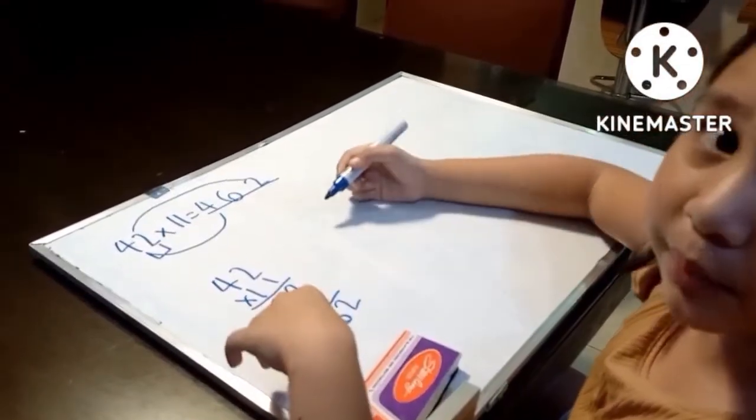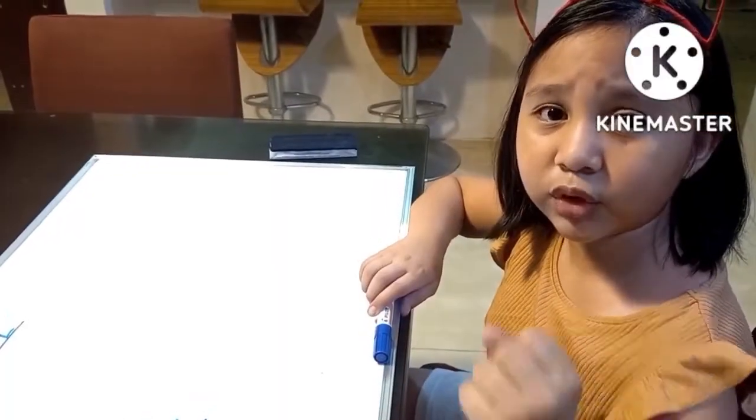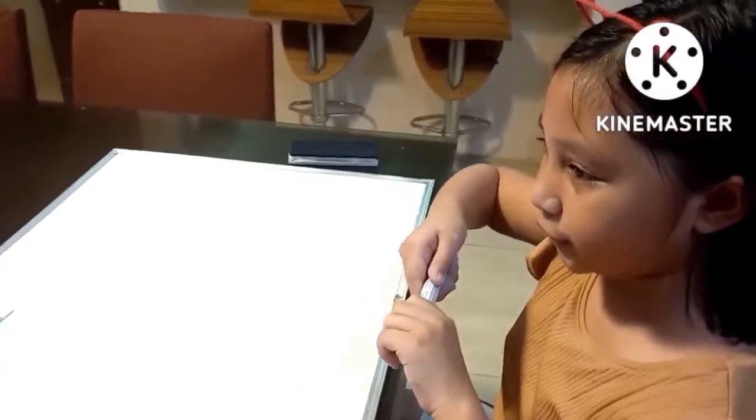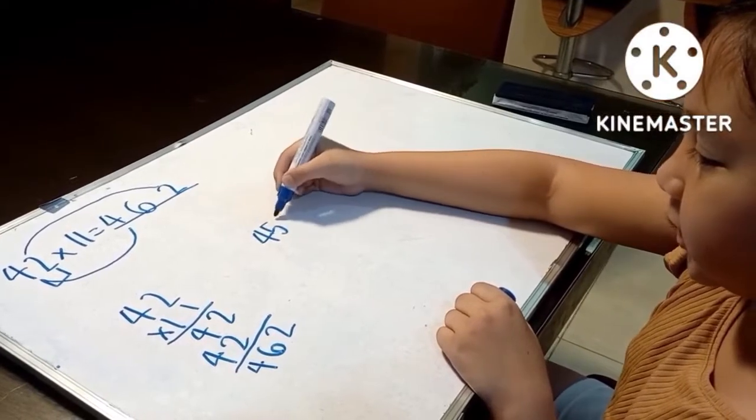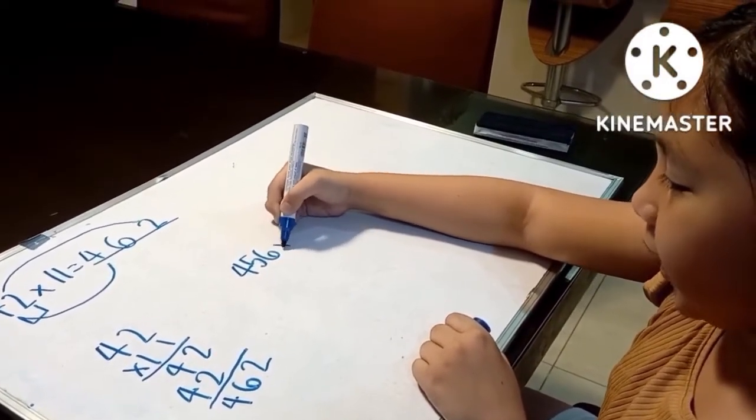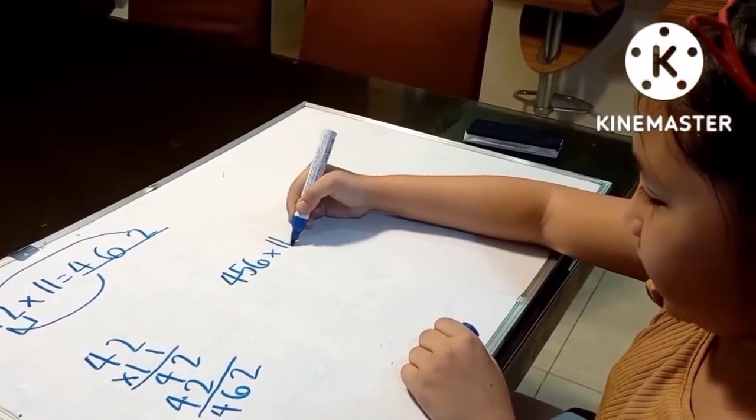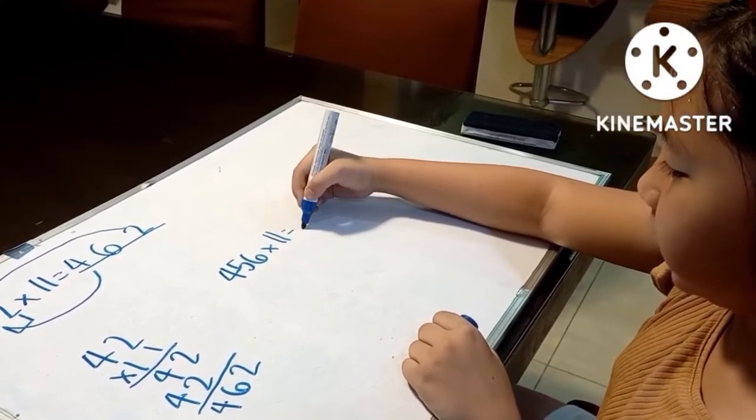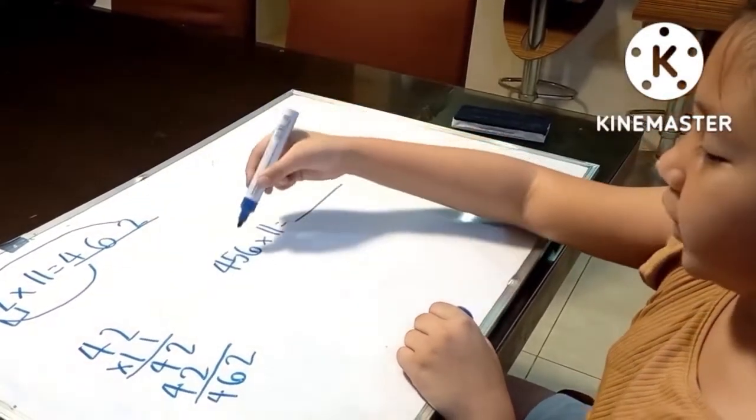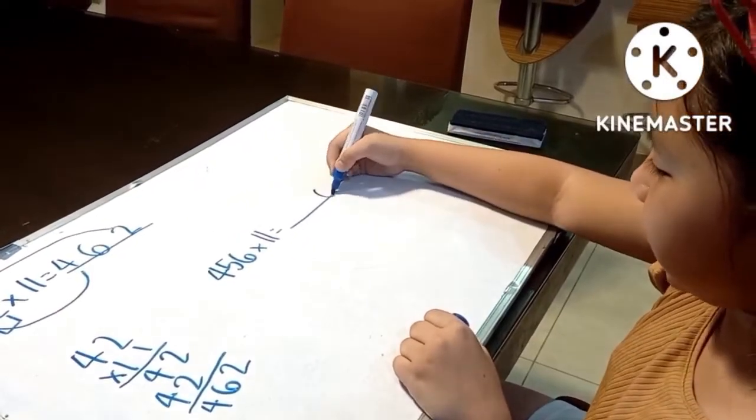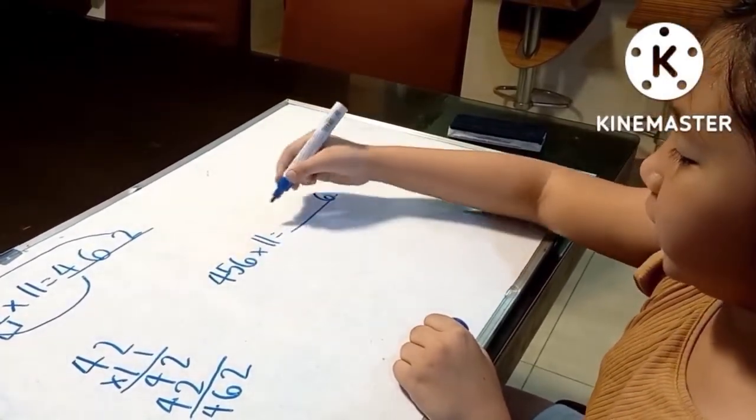Now the second problem. Let's proceed to three digits. So, 456 times 11 equals. Like the two digits, we're going to put six at the last and four in the front.